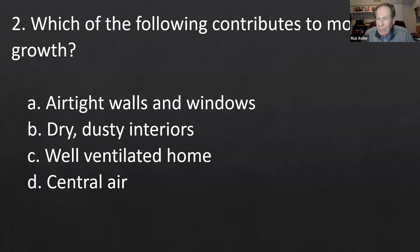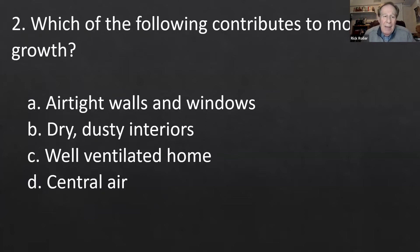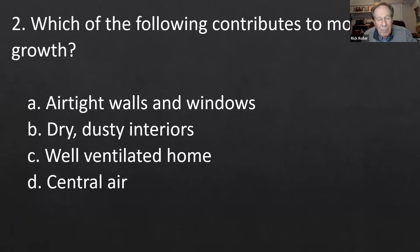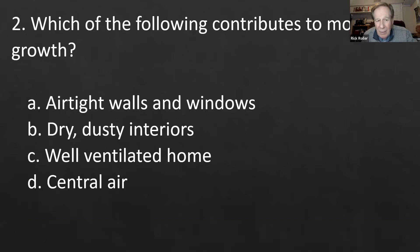Number two: which of the following contributes to mold growth? Options: A) airtight walls and windows, B) dry dusty interiors, C) well-ventilated home, D) central air. The middle two and central air involve ventilation. The correct answer is A — airtight walls and windows — because they can capture moisture and not dry it out.